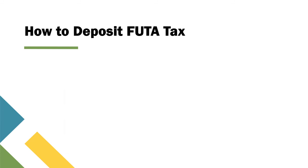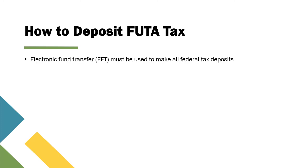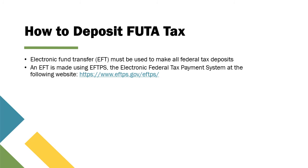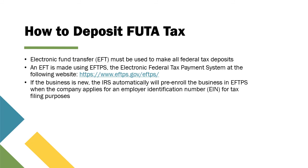Electronic fund transfer (EFT) must be used to make all federal tax deposits. An EFT is made using EFTPS, the Electronic Federal Tax Payment System, at www.eftps.gov. If the business is new, the IRS will automatically pre-enroll the business in EFTPS when the company applies for an employer identification number. Same-day wire payment options are also available when a business does not submit a deposit via EFTPS by 8 p.m.